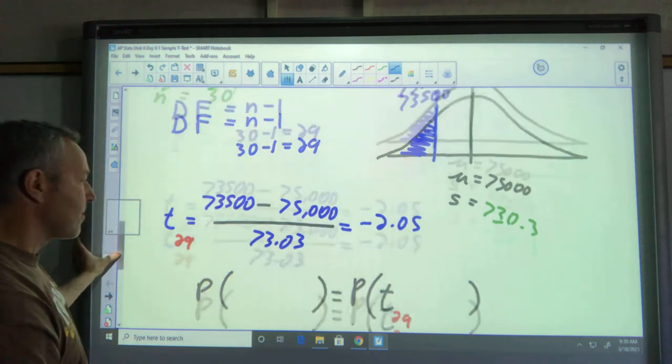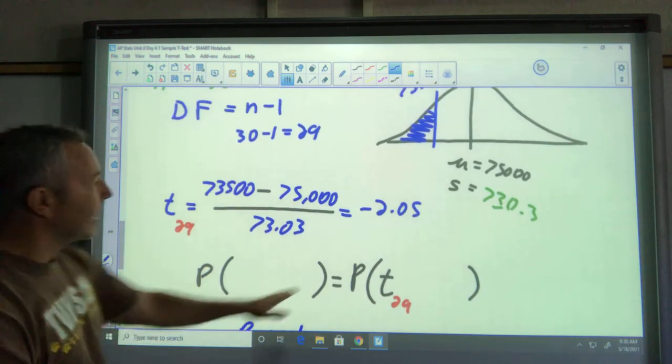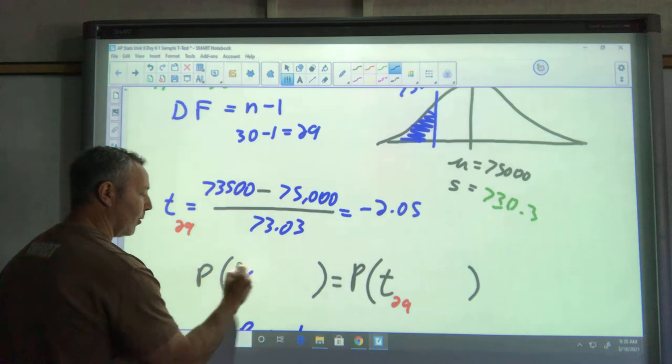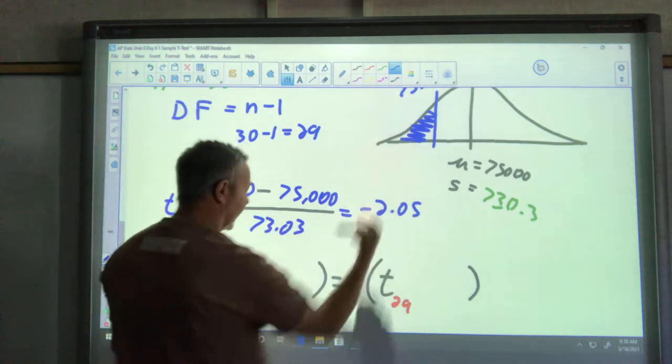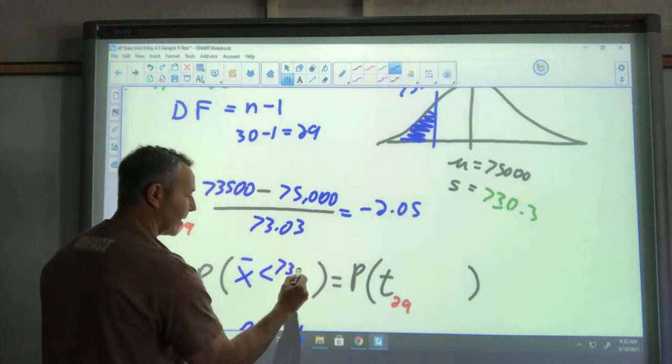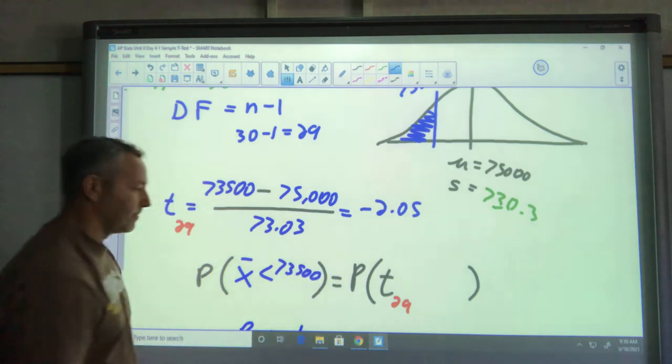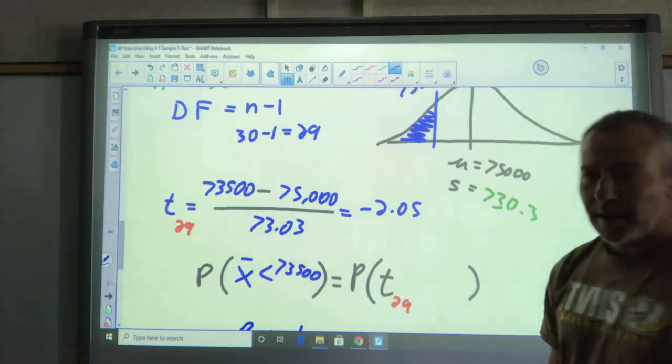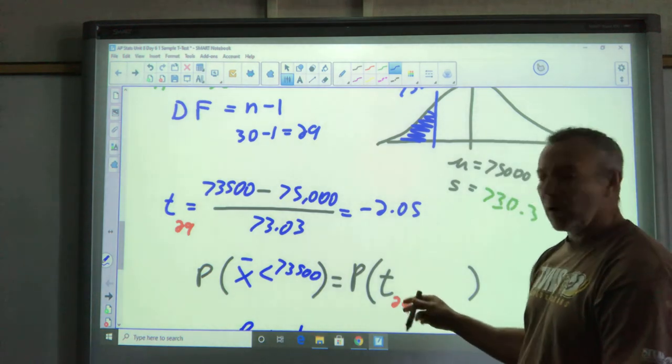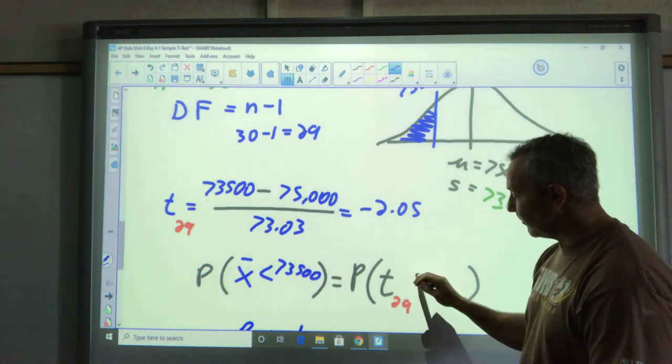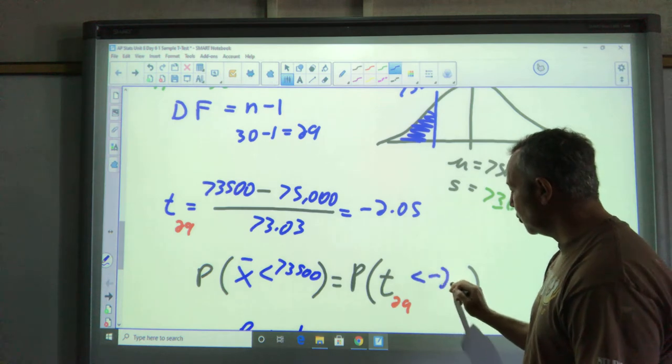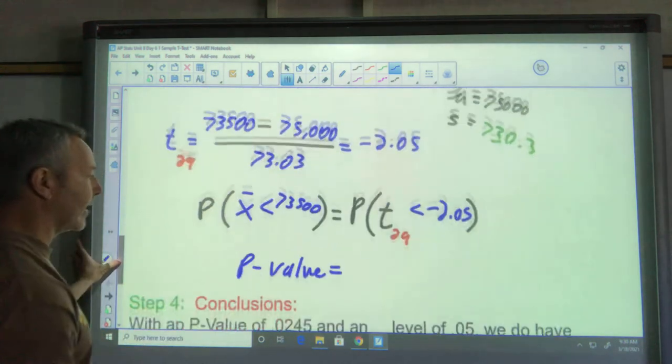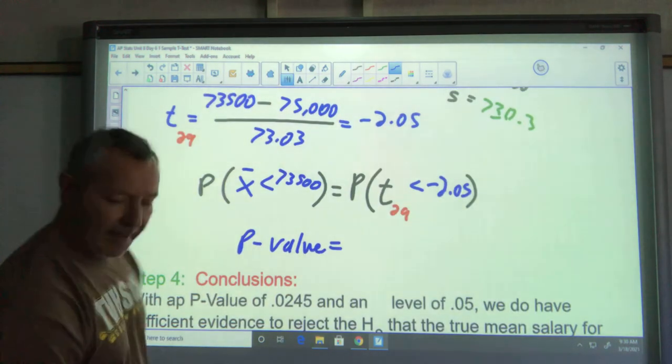Let's write our problem. I get my problem from the picture here. I now see the likelihood that your sample mean would be less than 73,500. That corresponds to the probability that you would have t with 29, a t score of 29 degrees of freedom, that is less than negative 2.05. We're going to run that test on our calculator and get our p value.